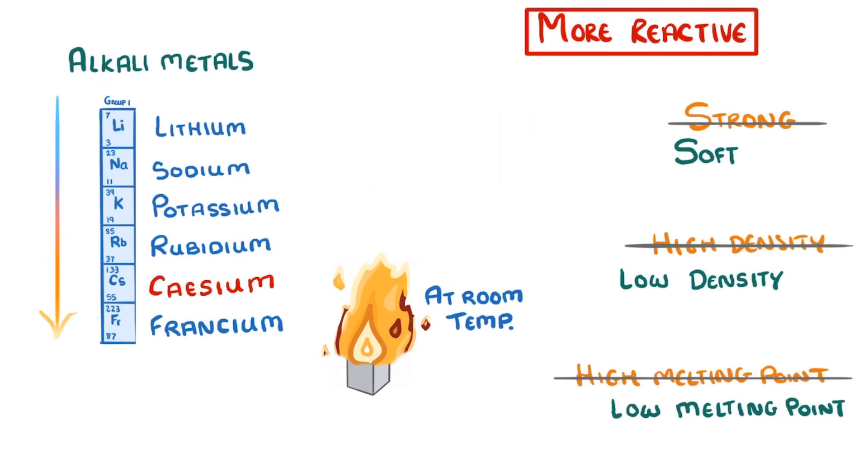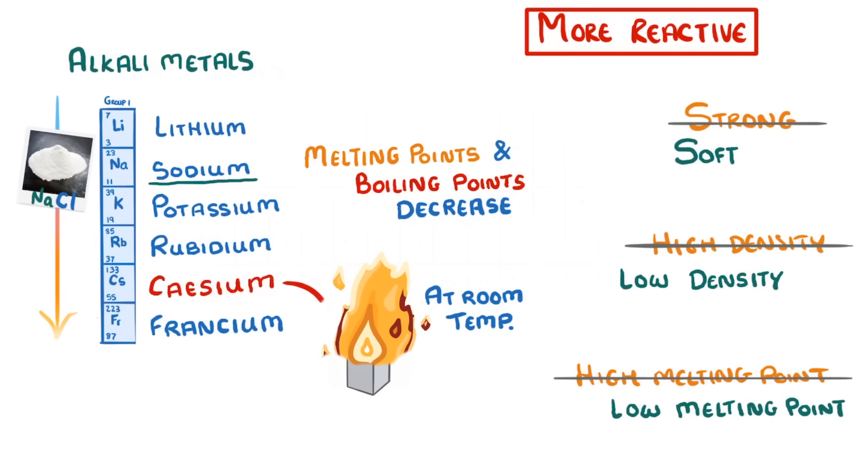Another trend as you go down the group is that the melting points and the boiling points decrease. An easy way to remember this trend in reactivity is that common table salt, which has sodium in it, doesn't just suddenly catch fire as you sprinkle it on your potatoes, whereas caesium probably would.